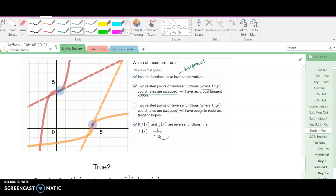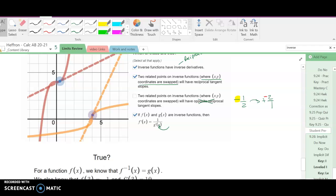Two related functions on the inverse function have opposite reciprocal. No, that's not true. It's not like negative one half becomes positive two over one. They have the same sign. So if this was negative one half, this would be negative two over one.